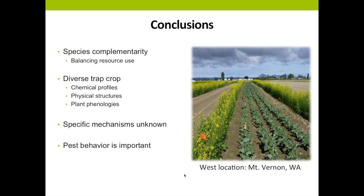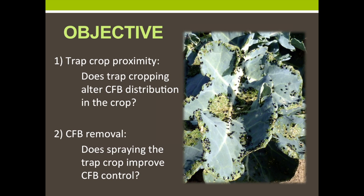We looked at pest behavior two different ways: trap crop proximity and flea beetle removal. Our objective was to further improve flea beetle control by exploring how close the trap crop needs to be to the broccoli (proximity), to see if we could reduce some of the overspilling of flea beetles from the trap crop into the broccoli. We also wanted to see how flea beetle removal — spraying the trap crop with a pesticide — would improve trap crop effectiveness.